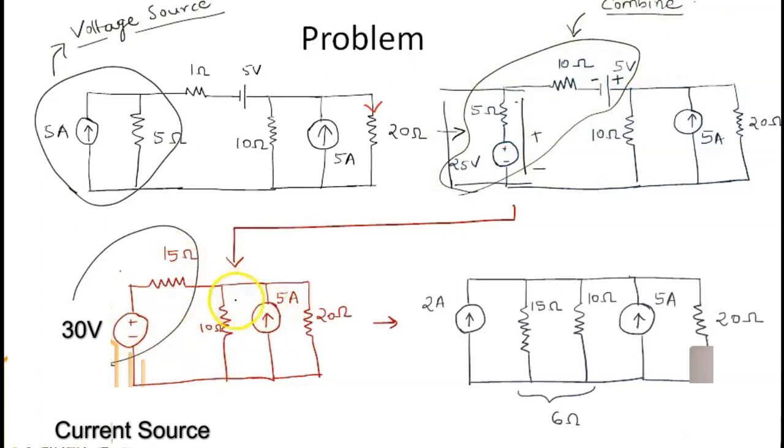Now we have the 10 ohm resistor parallel with 5 ampere current, but we are not going to convert this into voltage source which will unnecessarily complicate the circuit. So instead what we will do is we will convert this combination again into a current source. To convert this into current source, we will divide 30 volt by 15 ohms which gives 2 ampere current source, and parallel to it we have 15 ohm resistor and 10 ohm resistor, and the circuit further is continued.